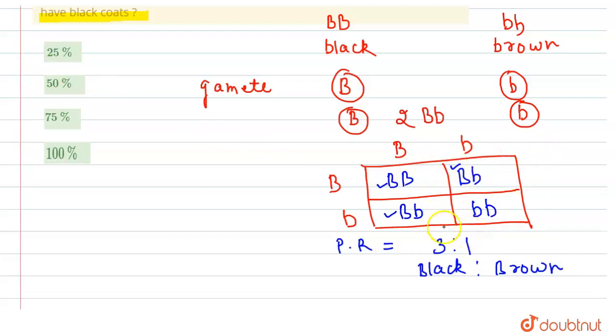will be black. So 75 to 25 is the ratio. Now our answer is 75% of the progeny will have black coats.